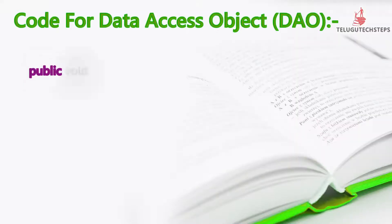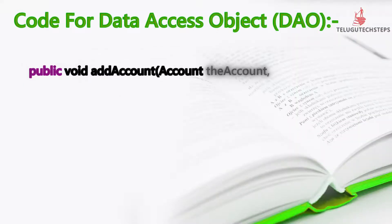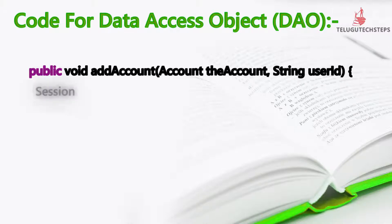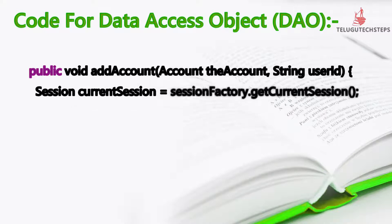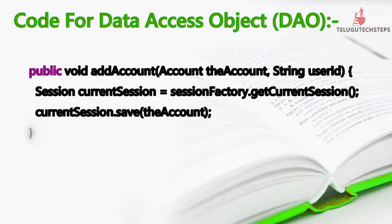We will have a data access object with coding to connect with the database. The basic Hibernate code is used to save an entity — this is the basic first line of programming.